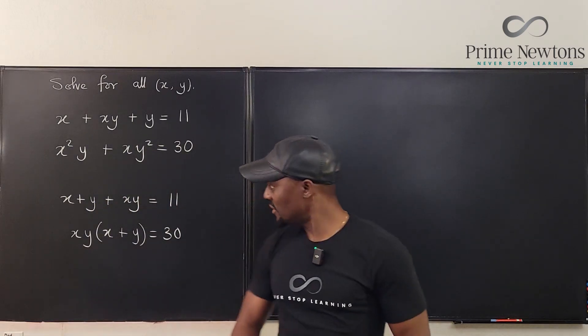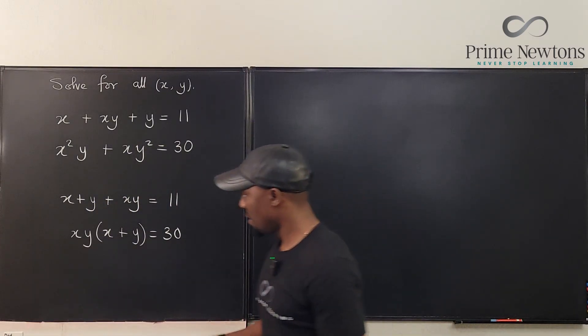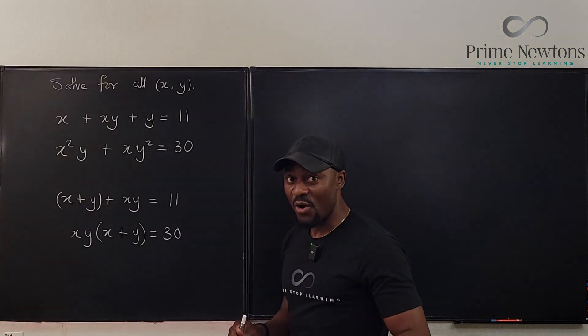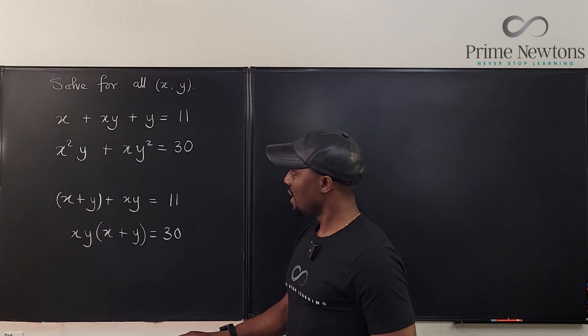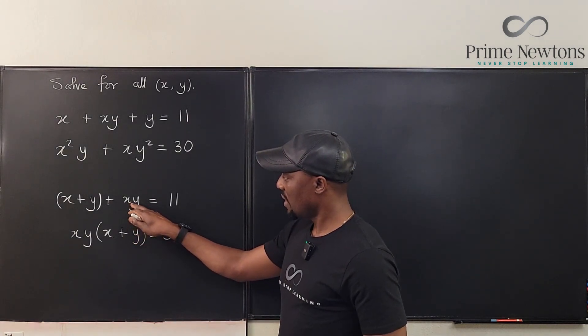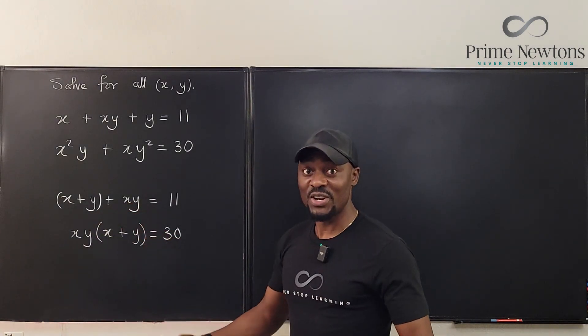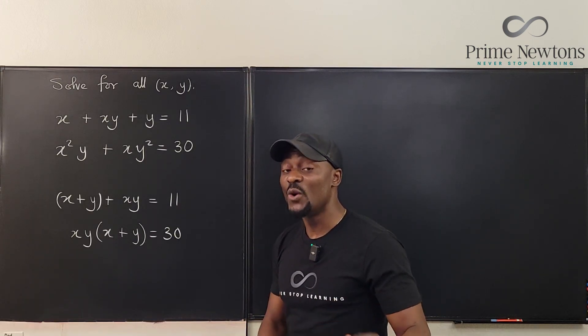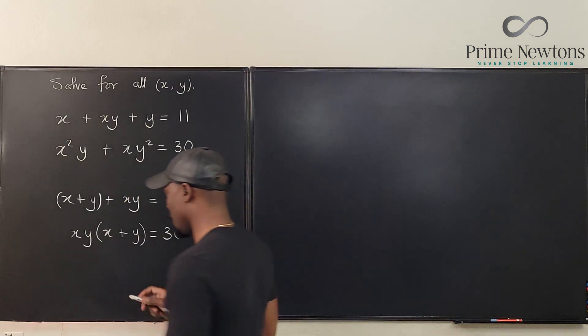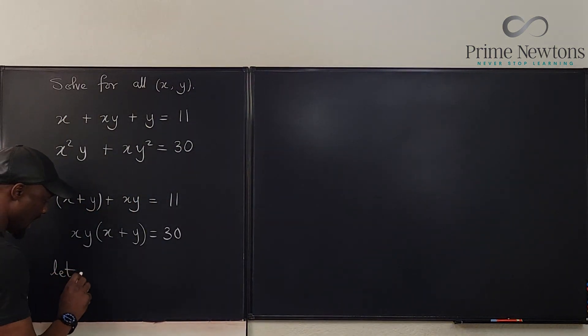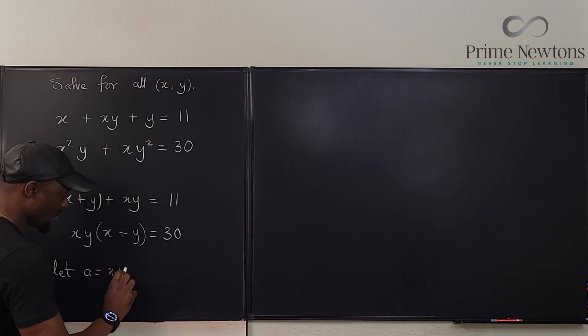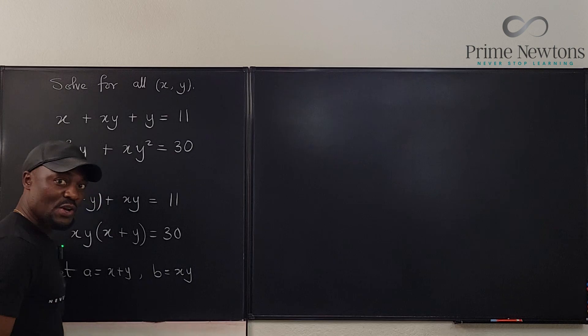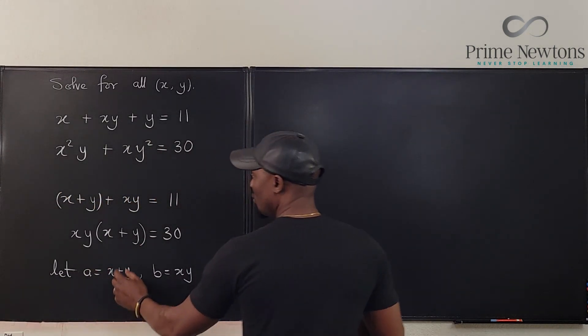Now what do you see? We can do this: the strategy is to replace xy and x plus y with something else. So we can say let a be equal to x plus y and let b be equal to xy. So we're going to have a different set of equations.